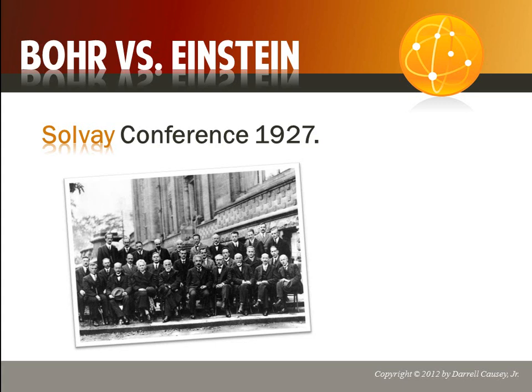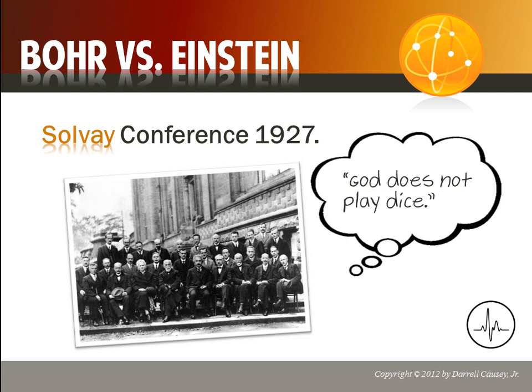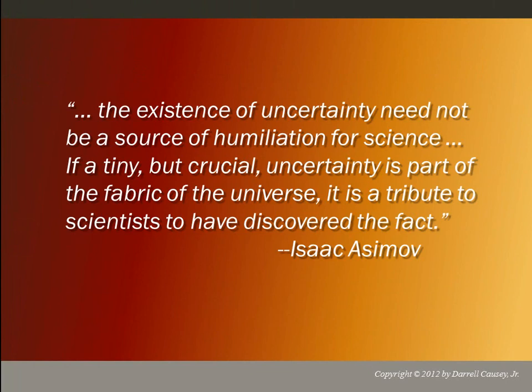We have the Solvay Conference in 1927. In one of their arguments, Einstein was known to say to Bohr, 'God does not play with dice.' And Bohr's response was, 'Einstein, stop telling God what to do.' Here's a quote from Isaac Asimov that we need to pay attention to: 'The existence of uncertainty need not be a source of humiliation for science. If a tiny but crucial uncertainty is part of the fabric of the universe, it is a tribute to scientists who have discovered the fact.' Knowing that we can't know everything and realizing that helps move science along.